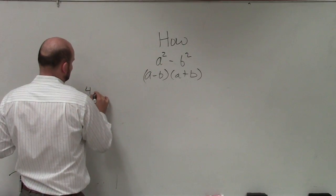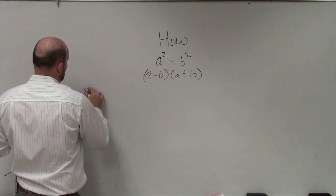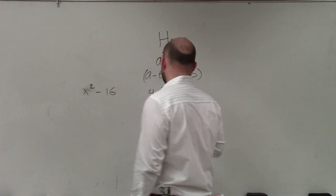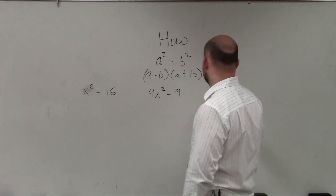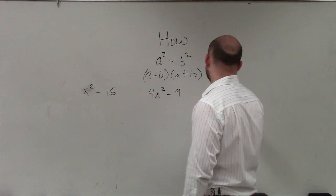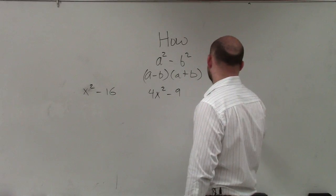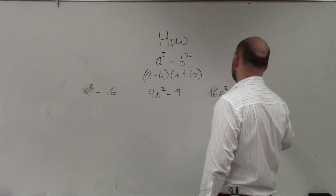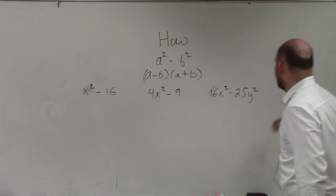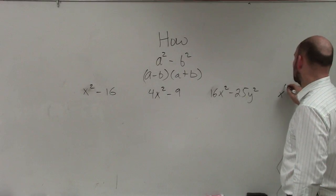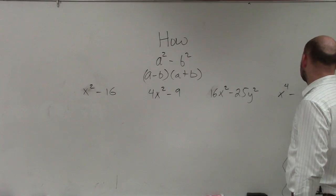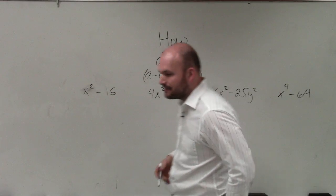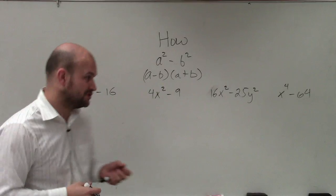Let's do x squared minus 16. Let's do 4x squared minus 9. And let's do another one here: 16x squared minus 25y squared. And then let's do x to the fourth minus 64. OK, now here's all examples of some problems that we can do by using difference of two squares.